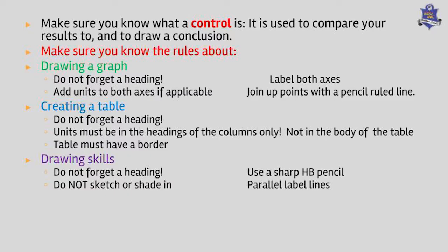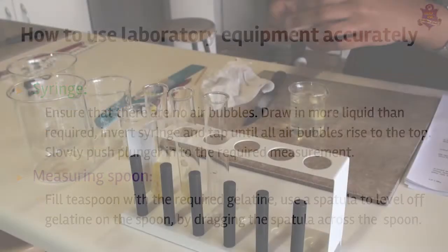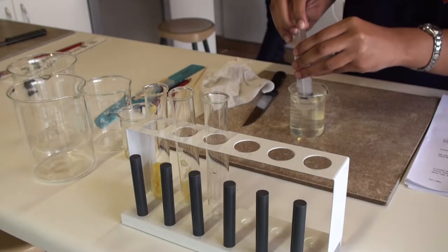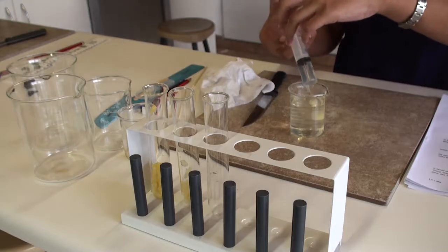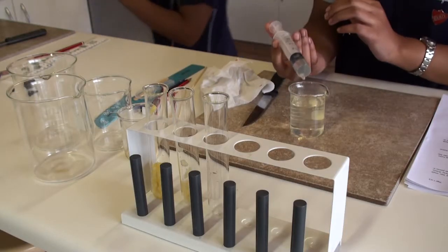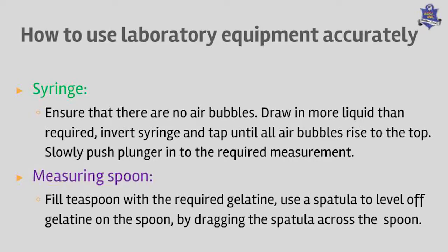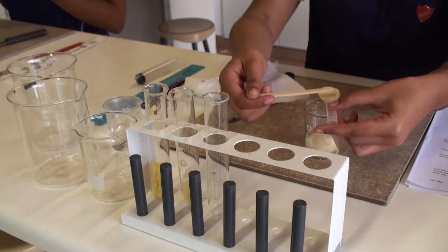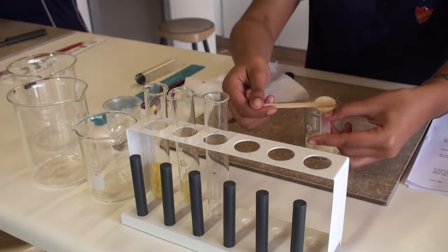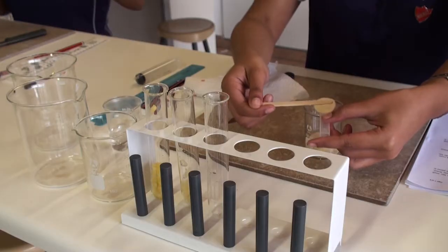For laboratory equipment, remember the last practice you did: draw up fluid from the syringe slowly, hold the syringe up, tap it, and get rid of the air bubble. For the measuring spoon, fill the spoon with gelatine, then take your wooden spatula — the ice cream stick — and level the gelatine out. That gives you the 5 ml you require for your practical.